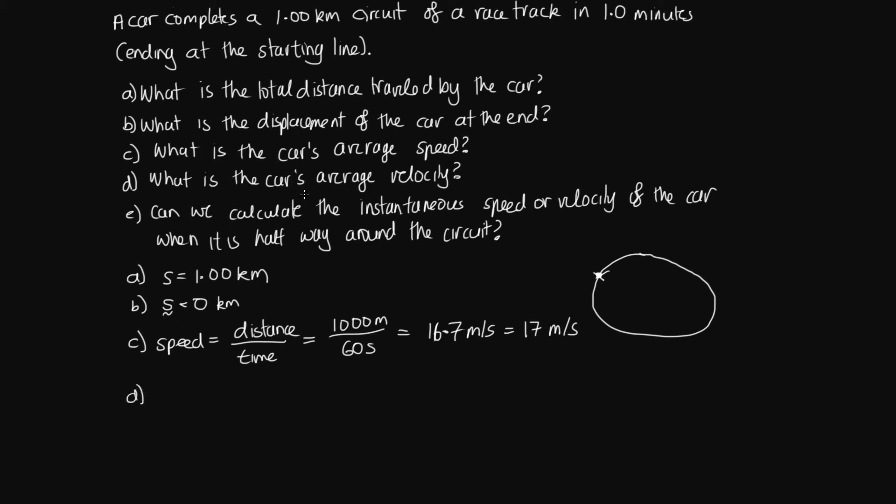Part D then says what's the car's average velocity. So the average velocity is equal to the change in the displacement, the final displacement minus the initial displacement over the time. But as we've said here, it ends up back where it started. So the change in the displacement here is 0 and this is over the 60 seconds. And so this is equal to 0 metres per second is the average velocity of the car.